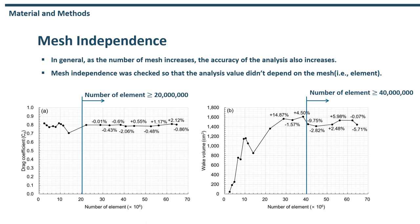Next, mesh independence. In general, as the number of mesh elements increases, the accuracy of the analysis also increases. Therefore, in order to prevent the mesh from affecting the analysis result, mesh independence was reviewed. The drag coefficients and wake volume were used to examine mesh independence. In the case of the drag coefficients, it converged when the number of elements was more than 20 million. In the case of the wake volume, it converged when it was more than 40 million. Thus, we generated a mesh satisfying more than 40 million elements in our analysis.